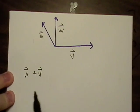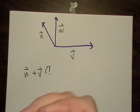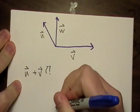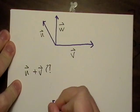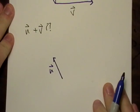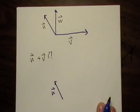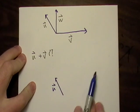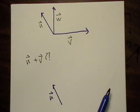Let's ask ourselves, what is u plus v? What's that going to look like? Let's just redraw u — that's the first one — and I'll put vector u there.